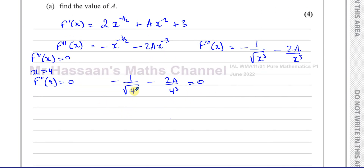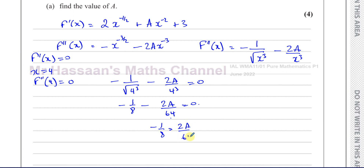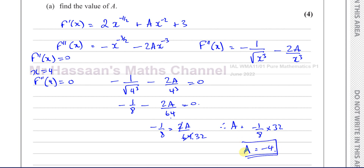The square root of 4 is 2 and 2 cubed is 8, so that's negative 1 over 8. And 4 cubed is 64, giving minus 1/8 minus 2A/64 equals 0. So minus 1 over 8 equals 2A over 64. The 2 cancels with 64 giving 32, so A equals negative 1/8 times 32, which gives A equals negative 4.